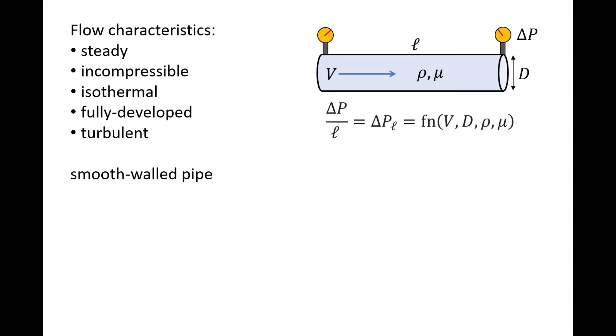delta P/L is some function of the flow speed V, pipe diameter D, fluid density rho, and the fluid's absolute viscosity, mu.